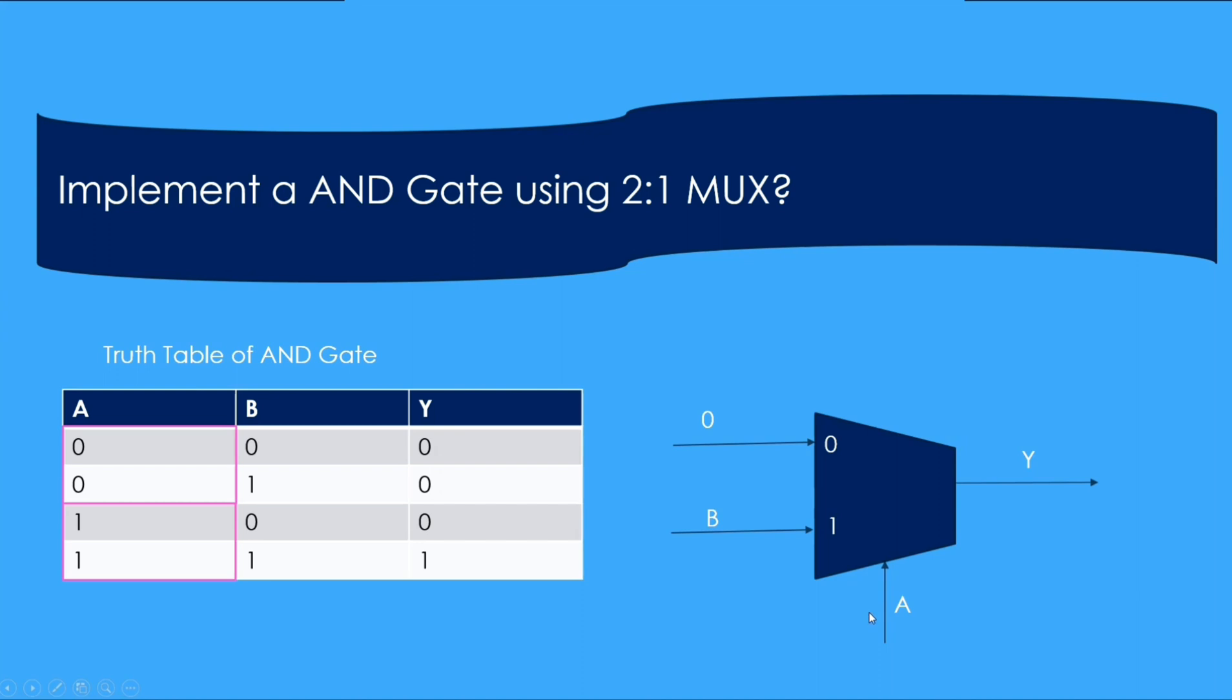And I know when A is 0, this input is going to pass to Y. And this is always 0. So let us tie it to 0.